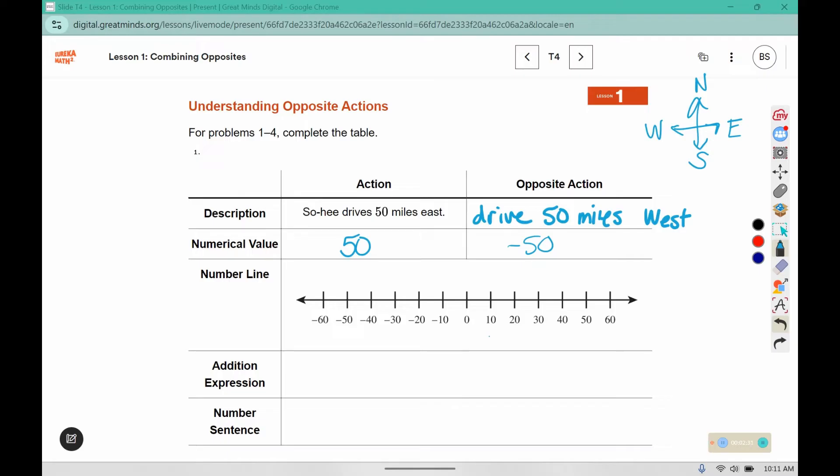So the opposite numerical value would be negative 50. On the number line, we're going to graph both of those points, 50 and negative 50. Then we need to write an addition expression. 50 plus negative 50. And the number sentence would say, 50 plus negative 50 is 0. Another way we could graph those is we would start at 0 and head 50 to the east, 50 to the west, and then we would go 50 to the west, and we would end up back at 0.